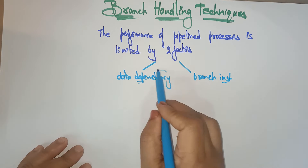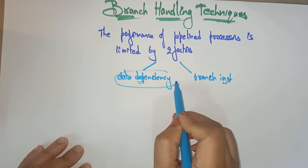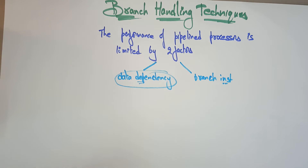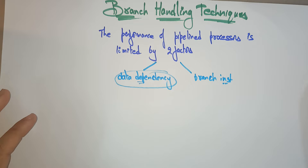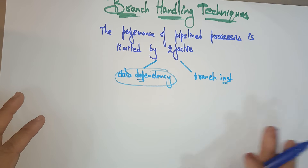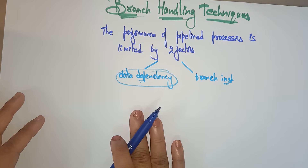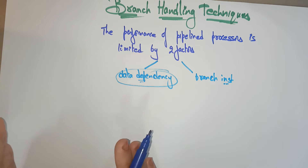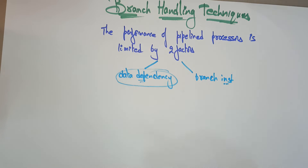We already discussed about data dependency. If you didn't know that, please watch my previous video. Then you will understand what exactly data dependency is and how the performance of a pipeline processor is limited by data dependency — meaning whatever problems occur in data dependency and how we overcome that.